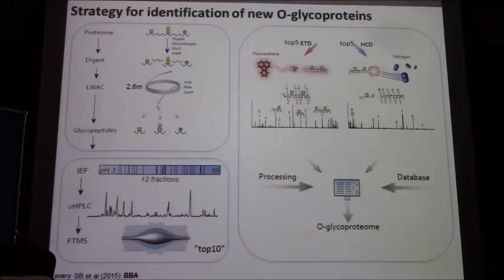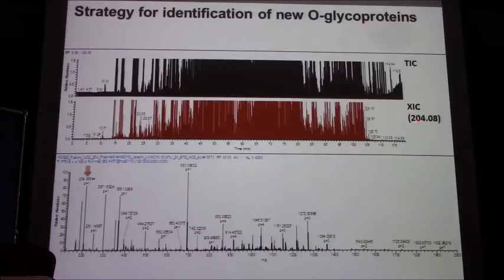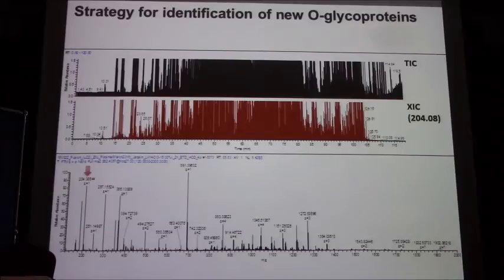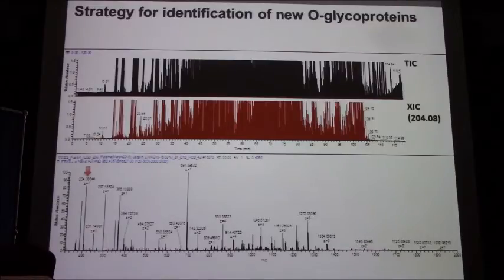For data processing, we use the Proteome Discoverer platform. In a typical example, looking at the total ion chromatogram and extracted ion chromatogram monitoring for the oxonium ion 204, you can see that the mixture is super well enriched — almost every single case is a glycopeptide. So we stopped doing oxonium-triggered ETD because every single case is already a glycopeptide; there is no sense in doing this triggering.